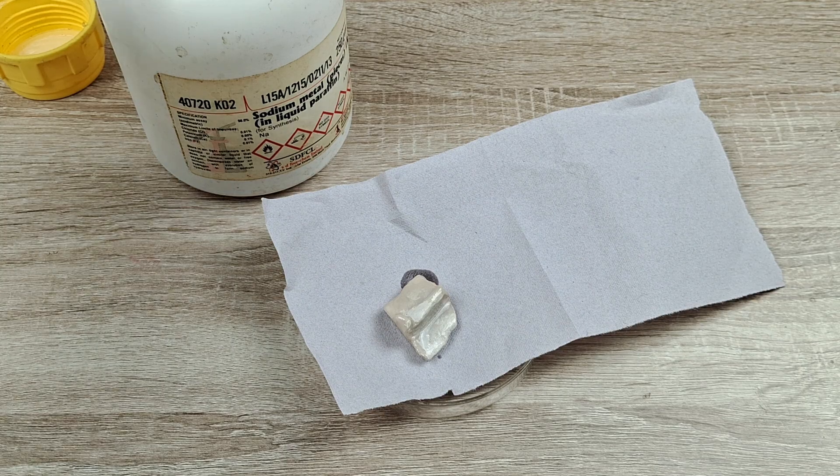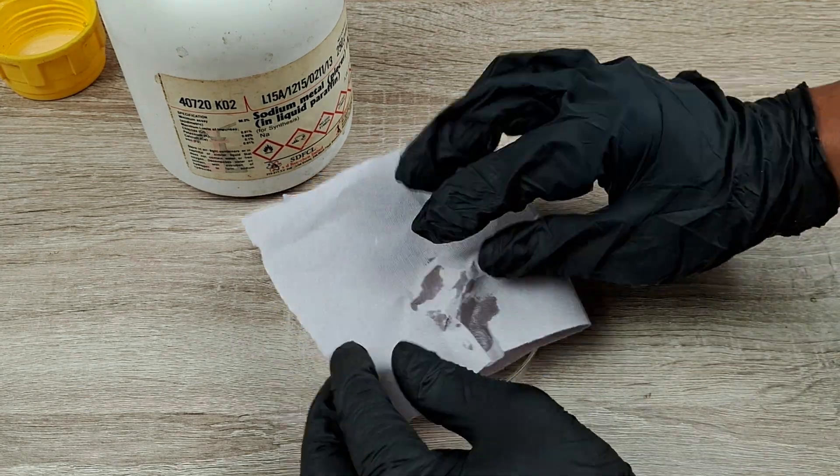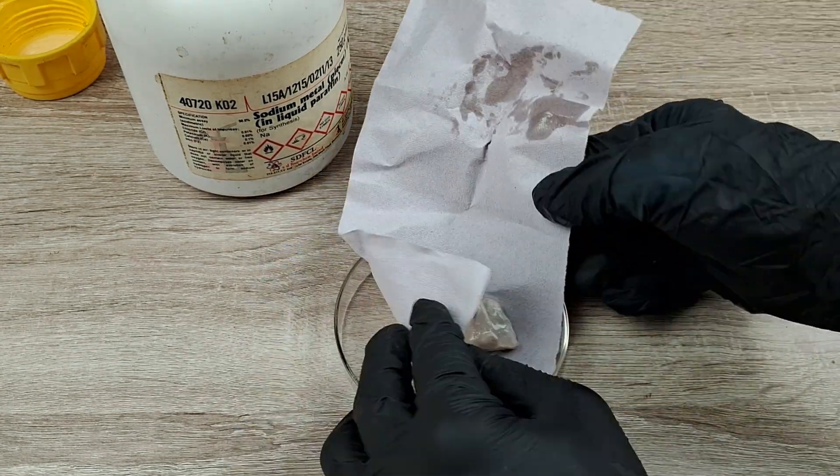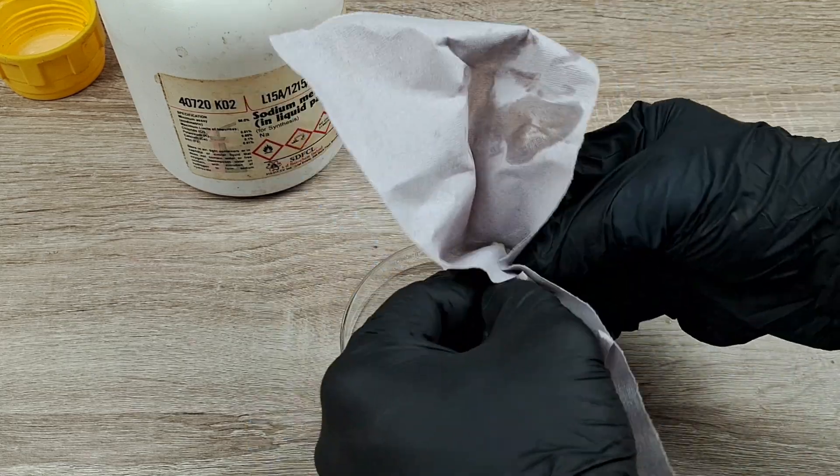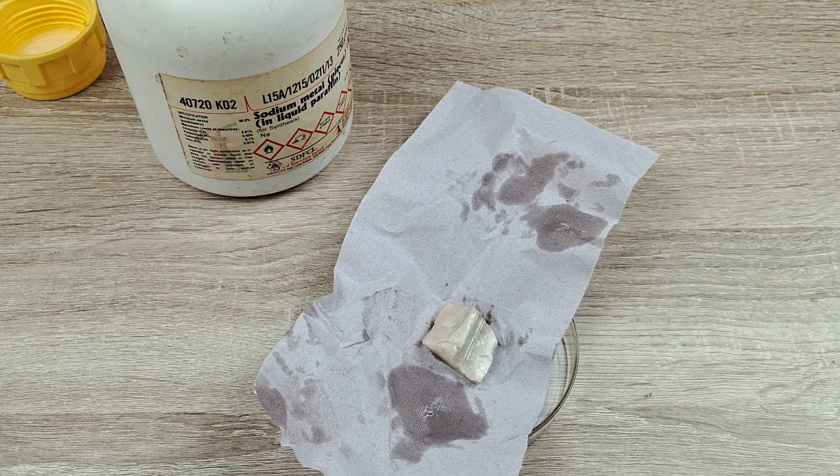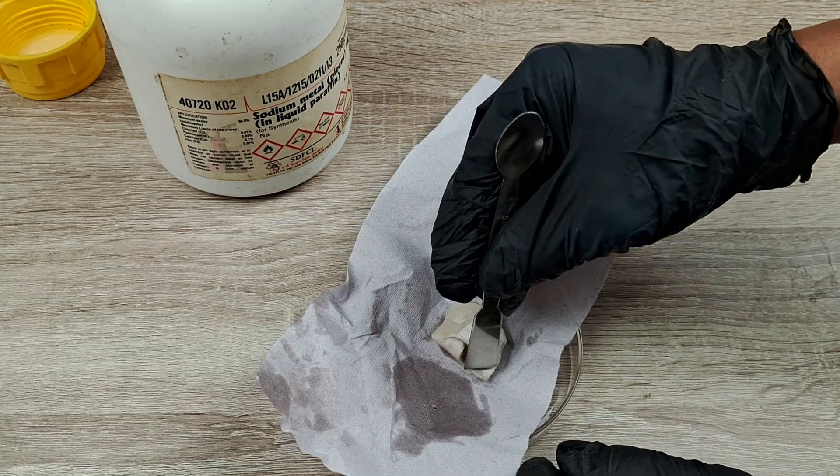Blot away the paraffin oil from the sodium metal. Next, using a knife or spatula, cut off a tiny piece of the metal.